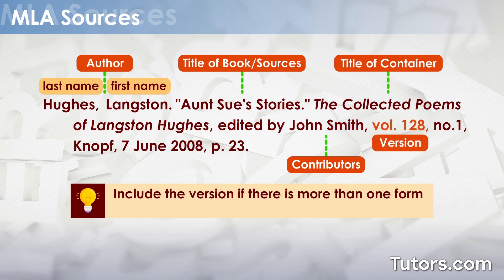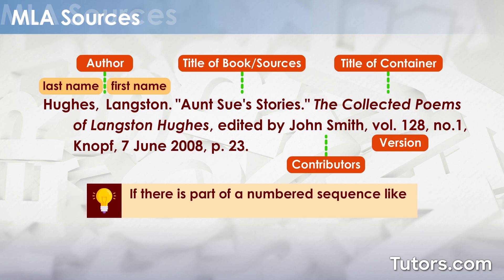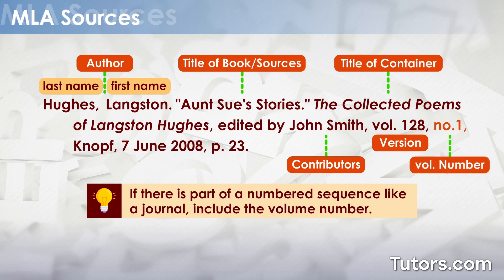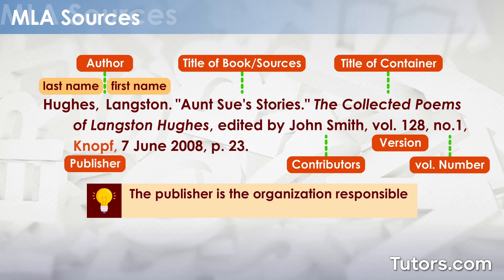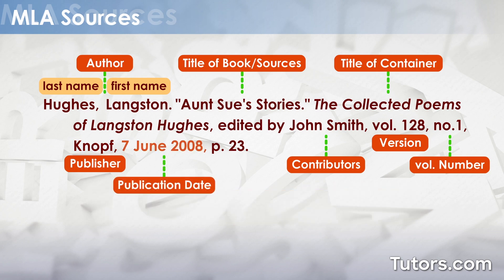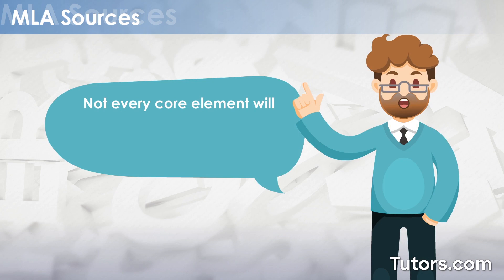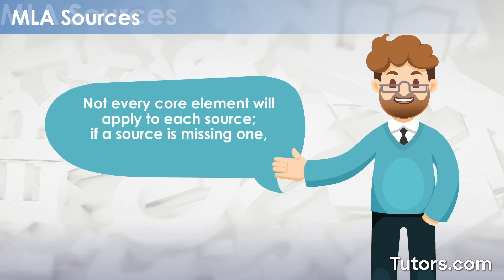Include the version if there is more than one from the source, such as editions. If the source appears in a work that is part of a numbered sequence like a journal, include the volume number. The publisher is the organization responsible for providing the source to the public. Identify the publication date. The location specifies where the information was found within the larger container, like page numbers or a URL. Not every core element will apply to each source — if a source is missing one, proceed to the next element.